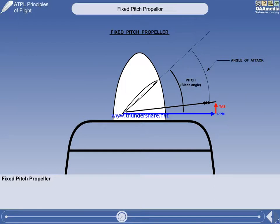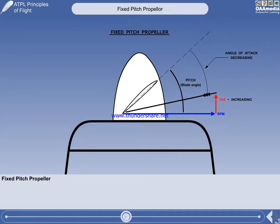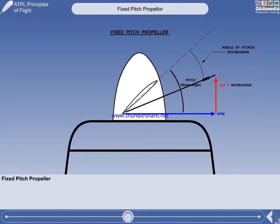We'll now see what happens as speed is increased to the cruise speed. Watch. The angle of attack decreases as the true airspeed increases.